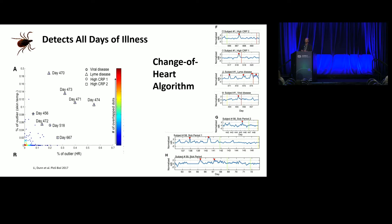We went back and looked at two years of data. There were four times when I was ill during that period: one was Lyme, two were viral infections, and a fourth time where I was asymptomatic but had high C-reactive protein. Every single time, retrospectively, we could see I had high resting heart rate and elevated skin temperature — including the asymptomatic case. We wrote algorithms to detect that jump-up in heart rate retrospectively for all four situations. We called the algorithm 'Change of Heart,' and we published this about five years ago.